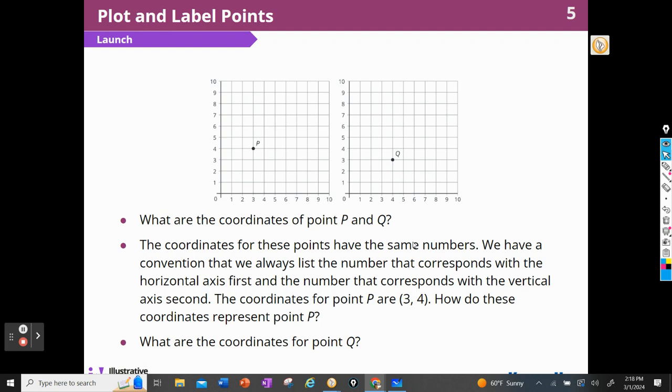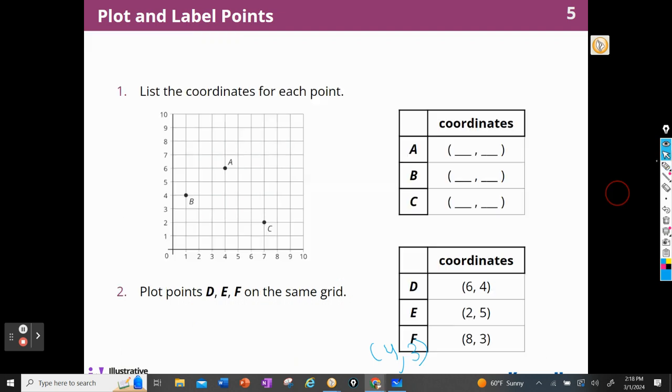What are the coordinates for Q? Well, we just talked about that, didn't we? It's going to be 4 and 3. We could write that down if we wanted to. 4, because we go over 4 first and then up 3. All right, so now we have to list the coordinates for each one. So A, remember, I have to go over first. A goes over to 4, and it goes all the way up to 6. B goes over 1 and goes all the way up to 4. And C goes over to 7 and up to 2.